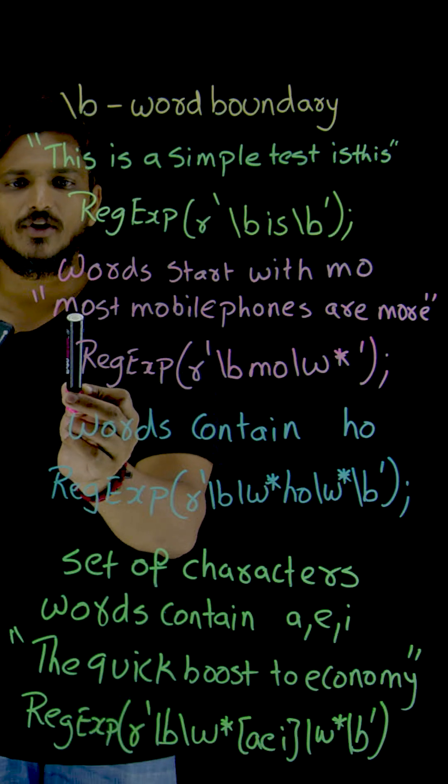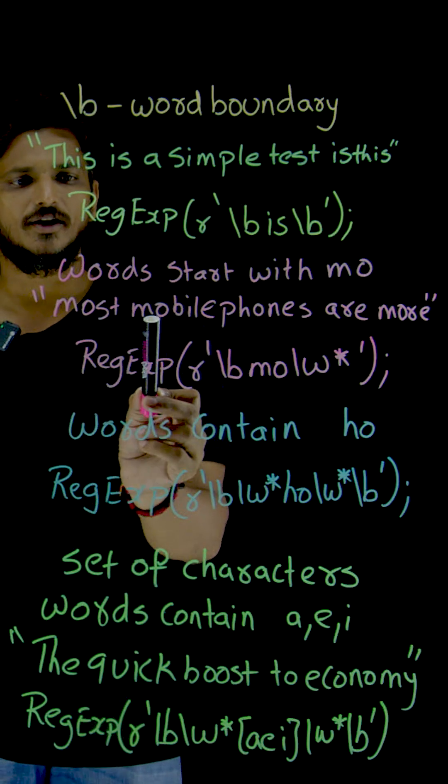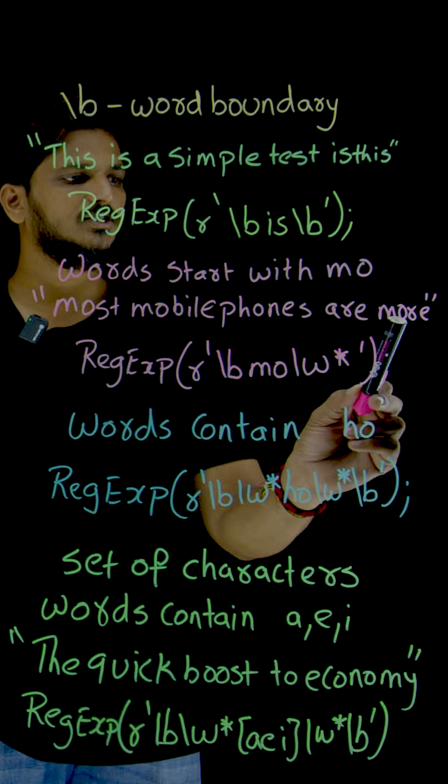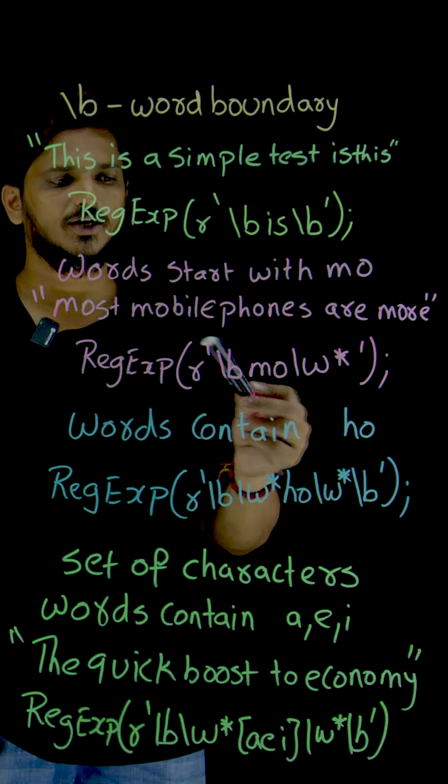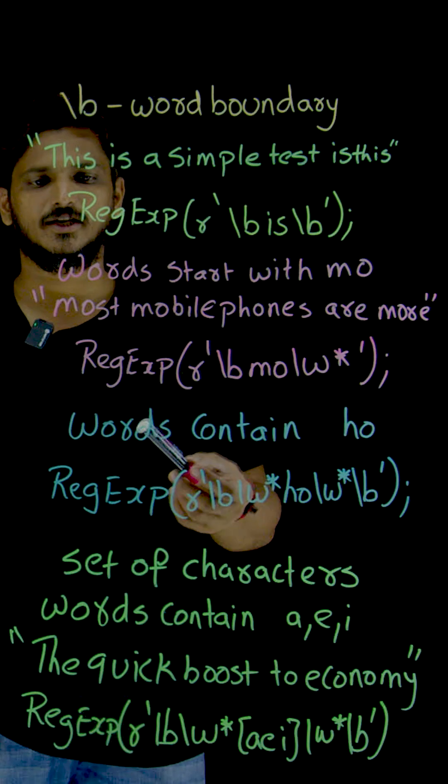We need to identify words starting with M-O: 'most' is a word, 'mobile' is a word, and lastly 'more' is a word. To write a regular expression for that,